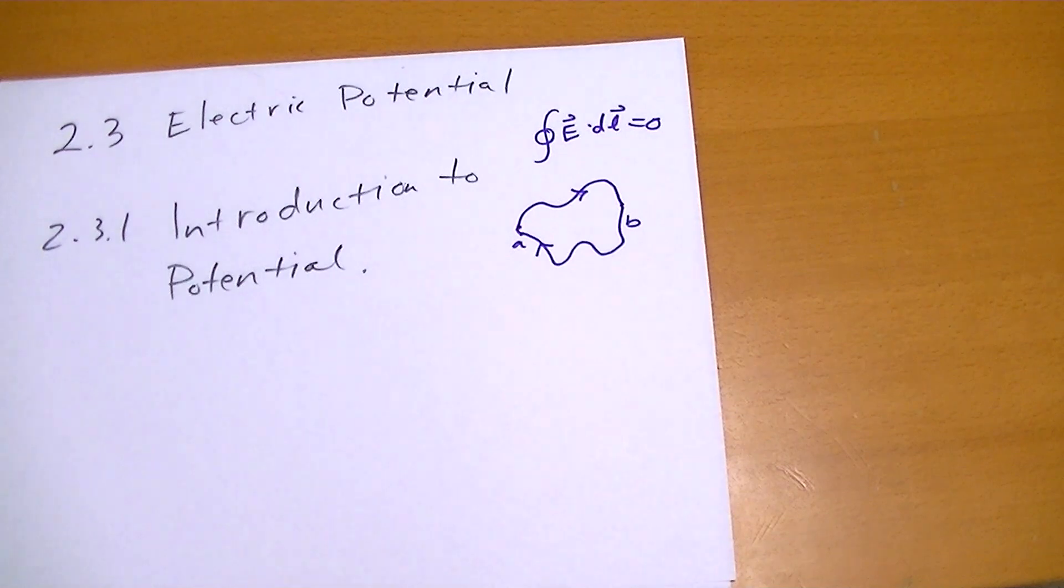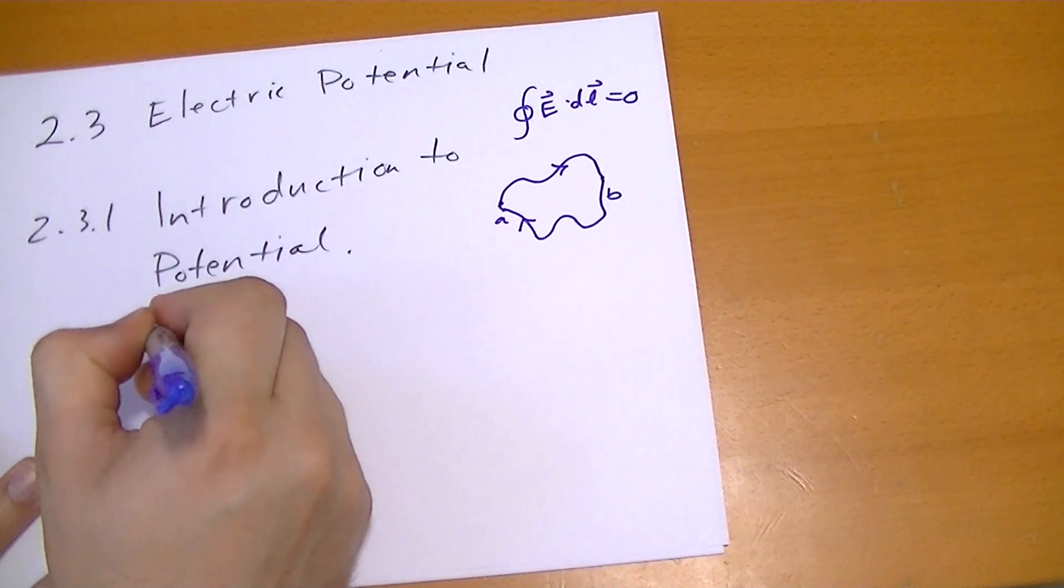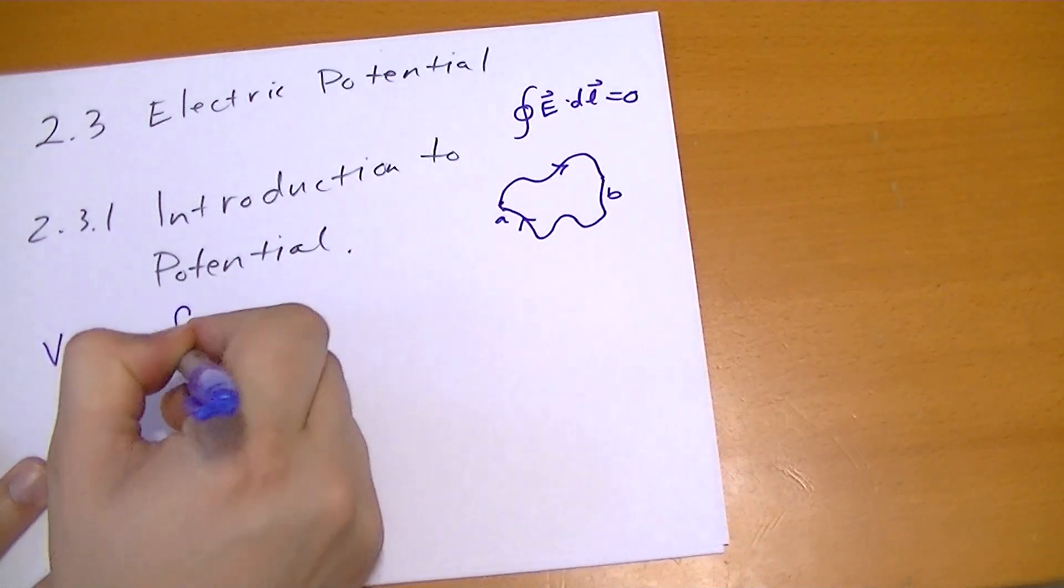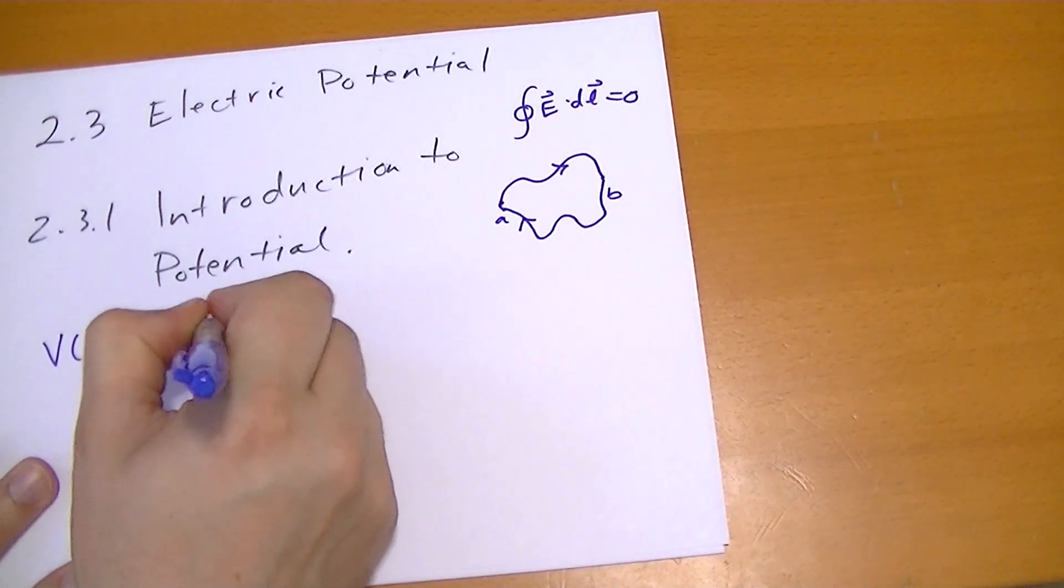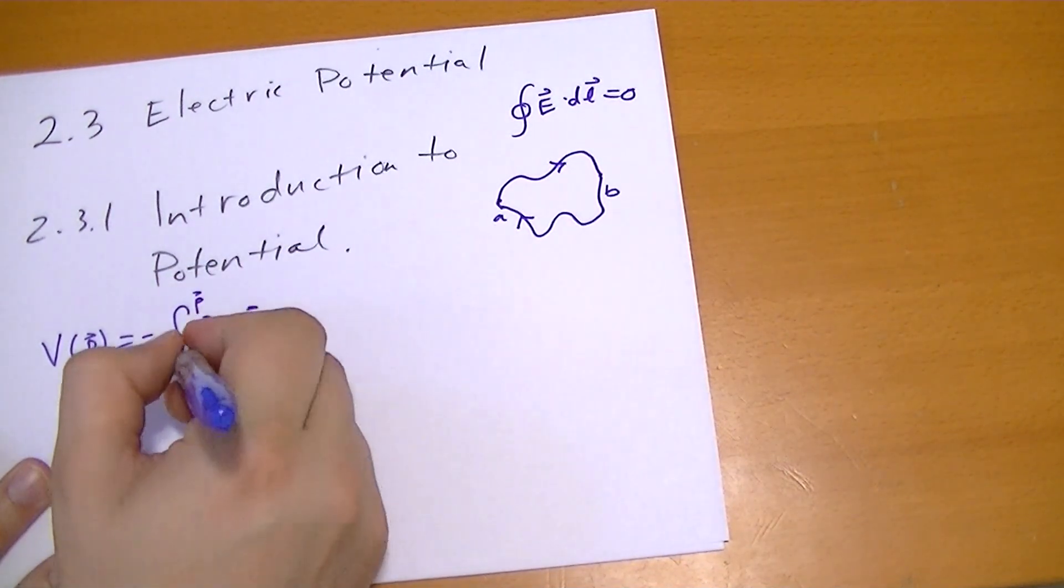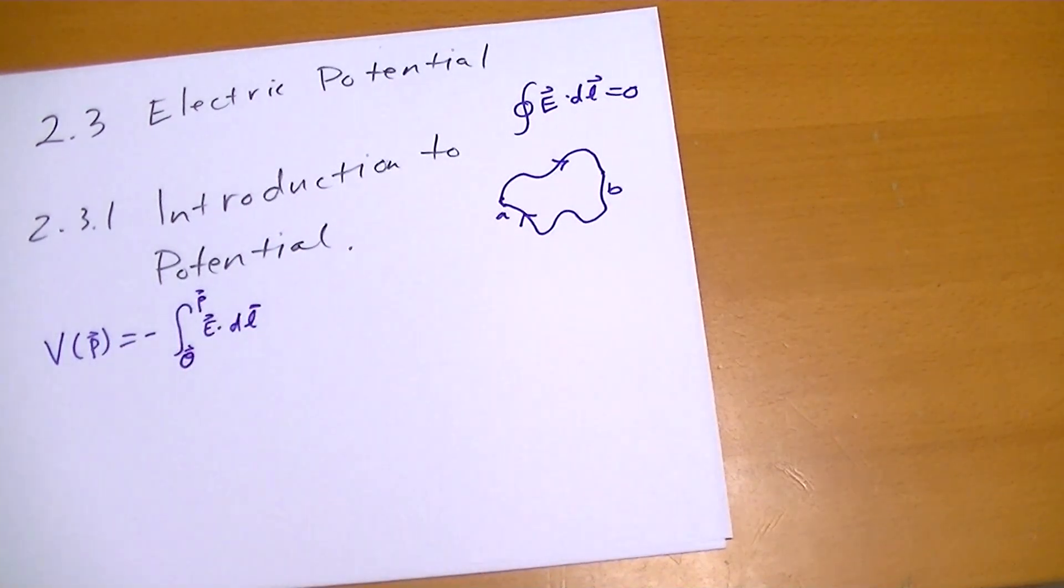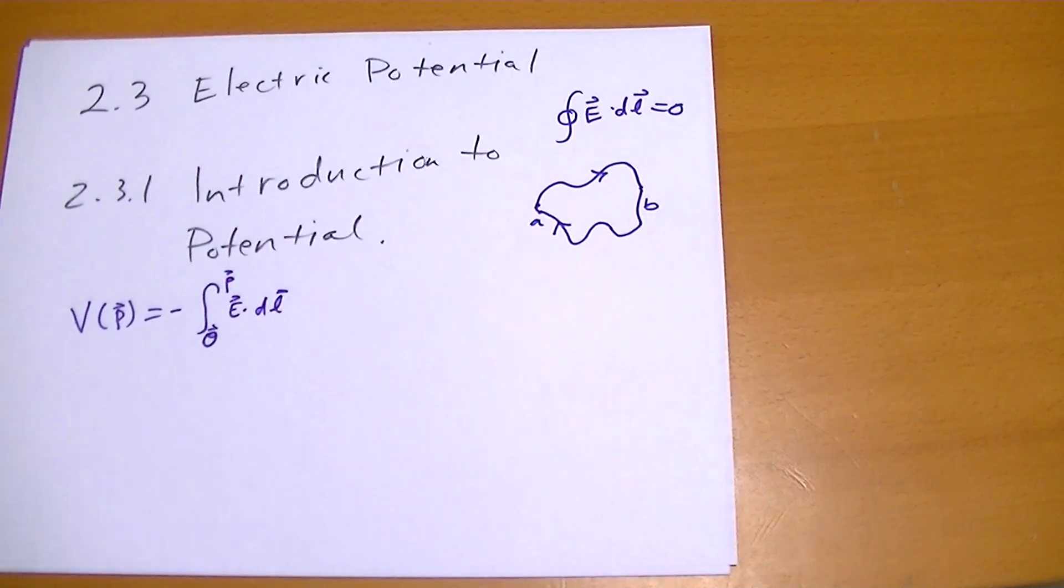So because the integral of E⃗·dL is independent of path, it doesn't matter which path you take. We can assign a scalar value given some point to be defined by negative of the electric field·dL to that point, starting from, and we're going to draw a curly O here.